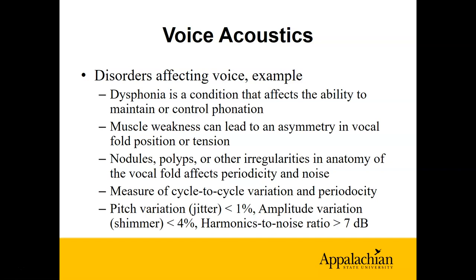Examining variation in pitch from cycle to cycle is referred to as jitter. Examining amplitude variation is referred to as shimmer. In typical speech, jitter is usually less than 1% — so less than 1% variation in the fundamental frequency from cycle to cycle; for a fundamental frequency of 100 Hz, that would be about 1 Hz. Amplitude variation is usually less than 4%. A measure of how much noise is in the voice is called harmonic-to-noise ratio, which is typically above 7 dB, and in most normal speakers it's more like 20 dB.